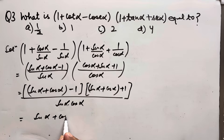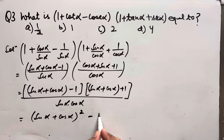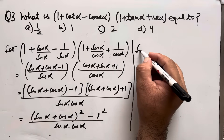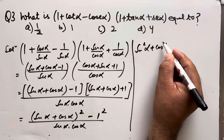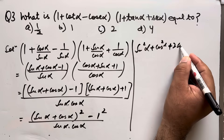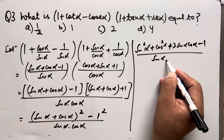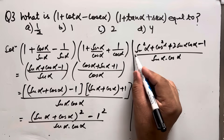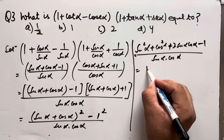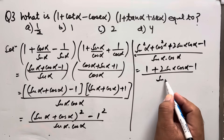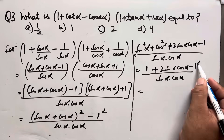This simplifies to (sinα + cosα)² − 1² all over sinα·cosα. Expanding: (sinα + cosα)² = sin²α + cos²α + 2sinα·cosα = 1 + 2sinα·cosα. So the numerator becomes 1 + 2sinα·cosα − 1 = 2sinα·cosα.